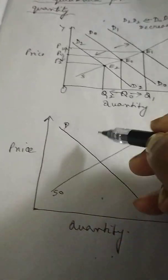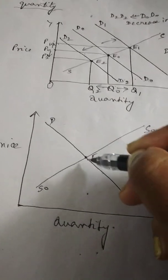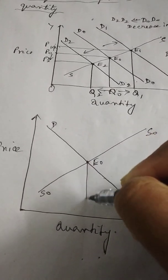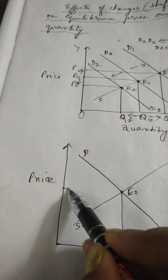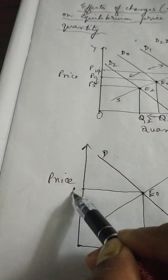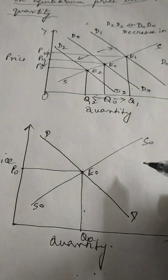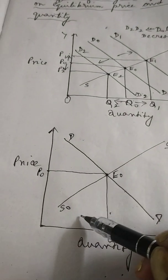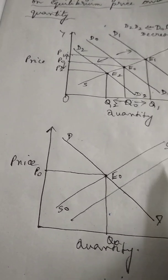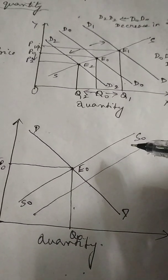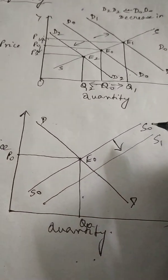The initial equilibrium point is E0, initial equilibrium quantity is Q0, and initial price is P0. Now suppose supply increases — the supply curve shifts to the right to S1, S1. Supply increases, say technology improves, so supply will increase and the supply curve will shift to the right.